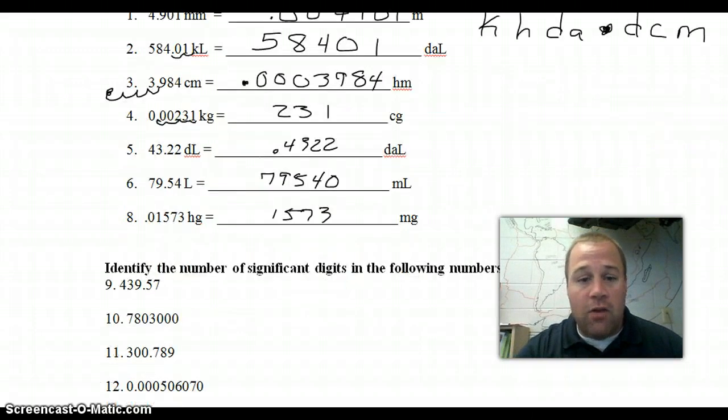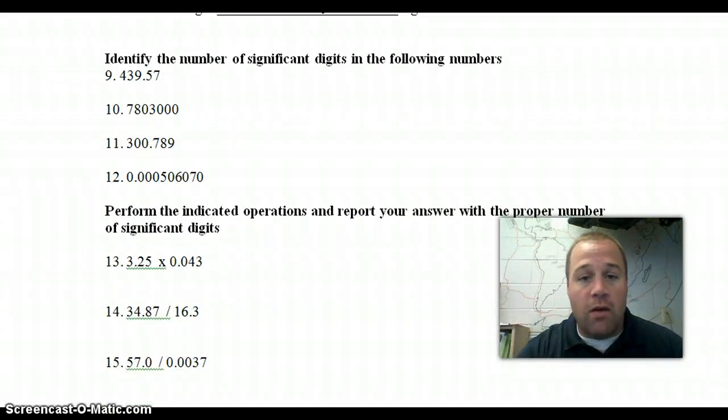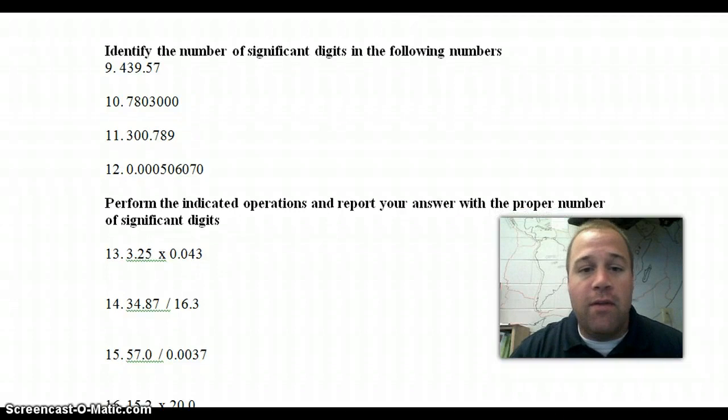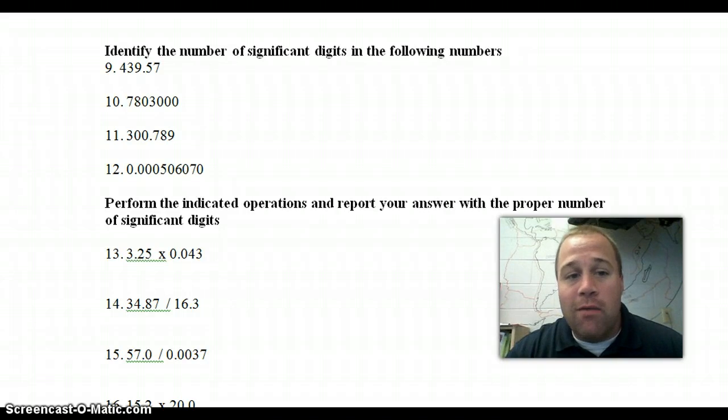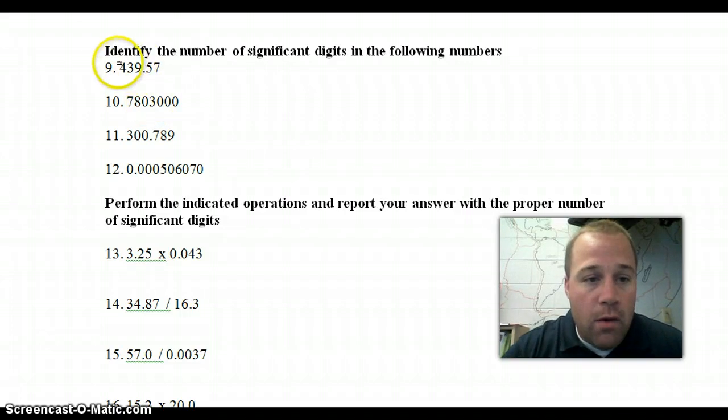The next section is going to be significant digits. Be able to identify the significant digits in each of the numbers. For these remember the Atlantic Pacific rule. The Atlantic, if the decimal point is absent, we start on the right and find the first thing other than zero and then count that and all the rest of the place values. If the decimal point is present, the Pacific side, which is the left, we're going to go left to right and find the first thing other than zero and count.